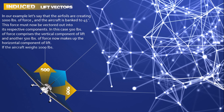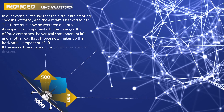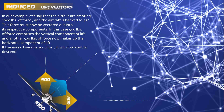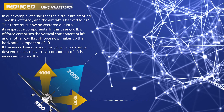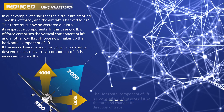If the aircraft weighs 1,000 pounds, it will now start to descend unless the vertical component of lift is increased to 1,000 pounds. The horizontal component of lift is now what pulls the aircraft into the turn and changes its direction of travel.